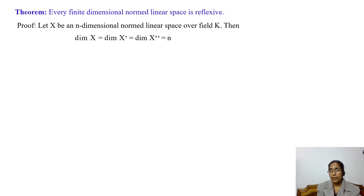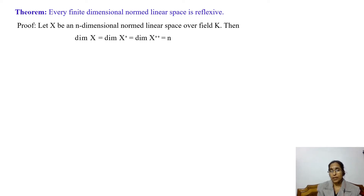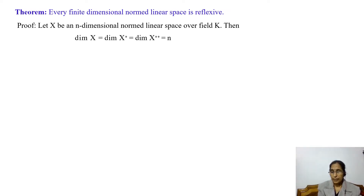We note that since x* is the vector space of all bounded linear functionals from x to k, and since dimension of x is equal to n and dimension of k is equal to 1, so dimension of x* is equal to n. Similarly, x** is the vector space of all bounded linear functionals from x* to k, and since x* is of dimension n and k is of dimension 1, so dimension of x** is equal to n.